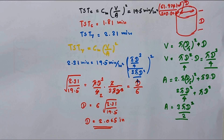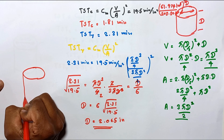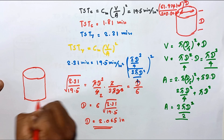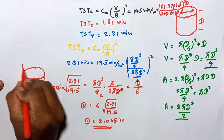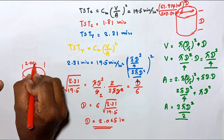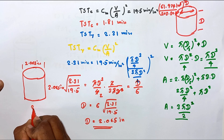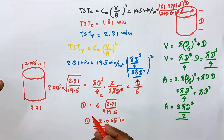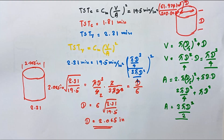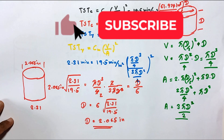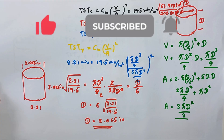The D value is equal to 2.065 inches. That means if we design the riser with height equal to 2.065 inches and diameter equal to 2.065 inches, we get the solidification time of 2.31 minutes for the riser, which is 0.5 minutes greater than the casting solidification time. This is how we solve this problem.